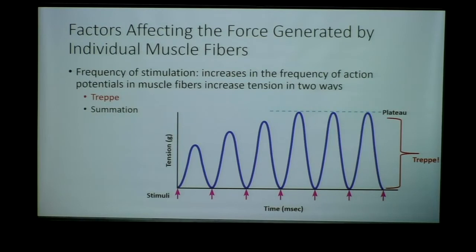Before distinguishing these two principles, remember from unit one that an action potential cannot sum — they cannot combine. The way that the nervous system and muscle, these excitable tissues, communicate and increase stimulus is simply by firing more action potentials. That is going to become very relevant as we talk about TREP and summation.